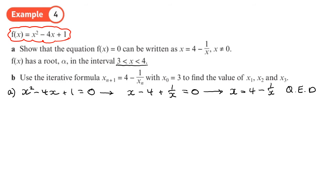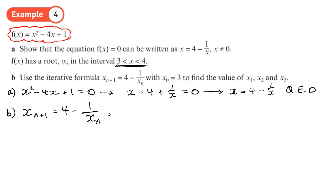The question says that f of x has a root alpha in the interval three to four. Use this iterative formula with a starting value of three to find x1, x2, and x3. This iterative formula says: to find the next value x of n plus 1, it's four minus one over your previous value xn — which is this rearrangement but with xn here and x of n plus 1 over here.